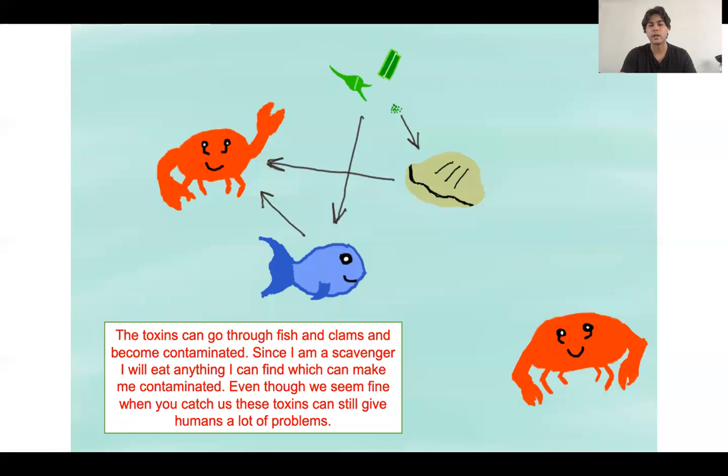Oh yeah, here's a little diagram of how that thing can work. The toxins can go through fish and clams and become contaminated. Fish can also eat the clams as well because some fish can be scavengers. Since Eugene here is a scavenger, he'll eat anything he can get his hands on. Even though they seem fine when you take them out of the water, it could be a completely different story when you actually eat them. We went over a lot of problems that can come from eating a contaminated marine animal.